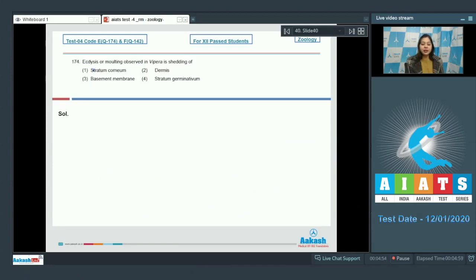Question number 174. Ecdysis or molting observed in Vipera is shedding off. We know that Vipera is viper and is a poisonous snake. Snakes shed off the upper layer of their skin which is called ecdysis or molting. This upper layer of skin is the stratum corneum.